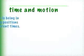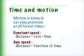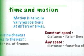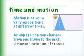Motion is being in varying positions at different times. Objects moving at a constant speed obey distance equals rate times time. Variable speeds require a time function. We can keep track of what time it is by numbering points in time, say every tenth of a second. An object looks like it's moving if it's in a slightly different position in every frame.